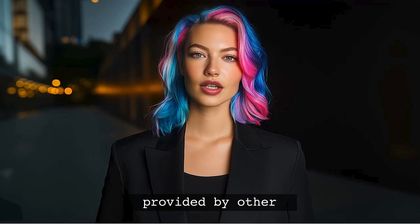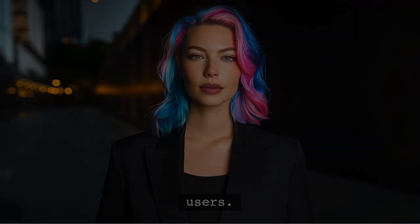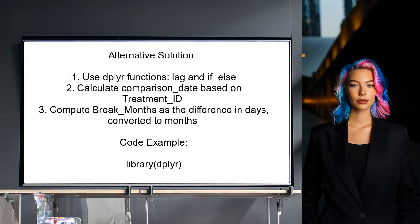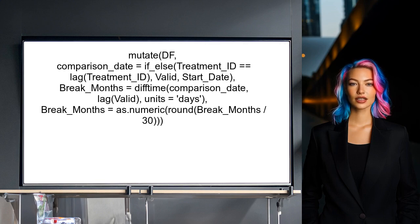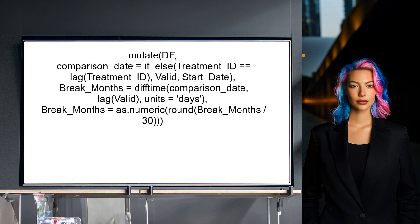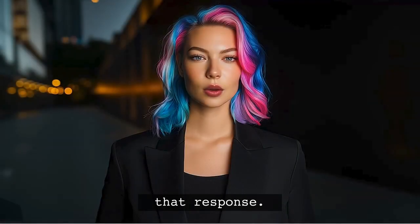Now, let's look at the answers provided by other users. An alternative solution involves using the dplyr package in R. They suggest utilizing functions like lag and if-else to simplify the computation of date differences. The method calculates a comparison date based on whether the treatment ID matches the previous row, then computes the difference in days between this comparison date and the previous valid date, converting it into months by dividing by 30.